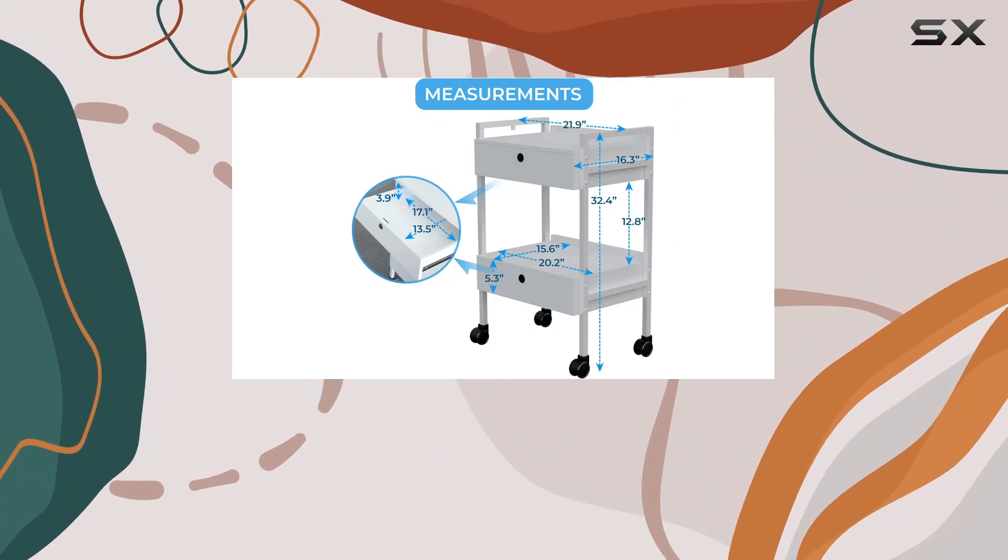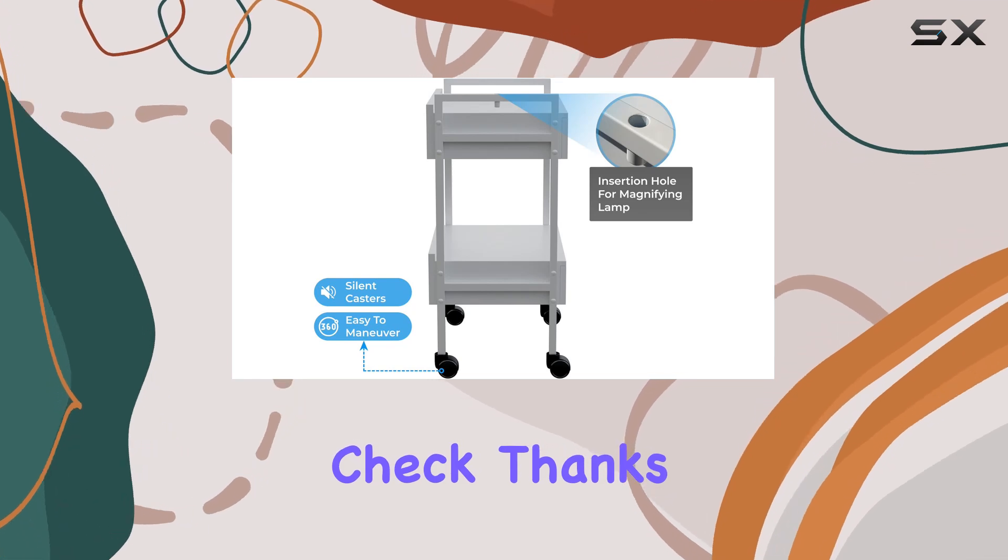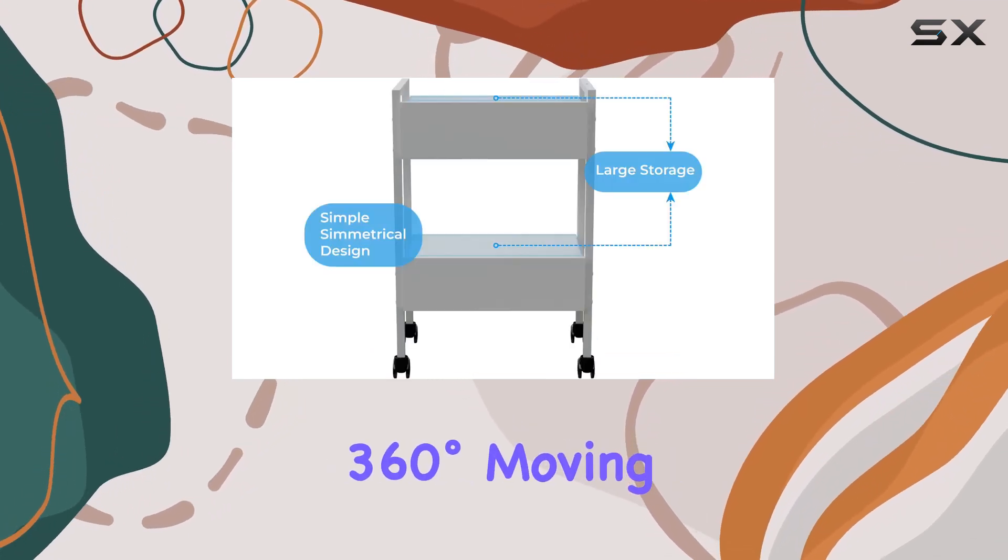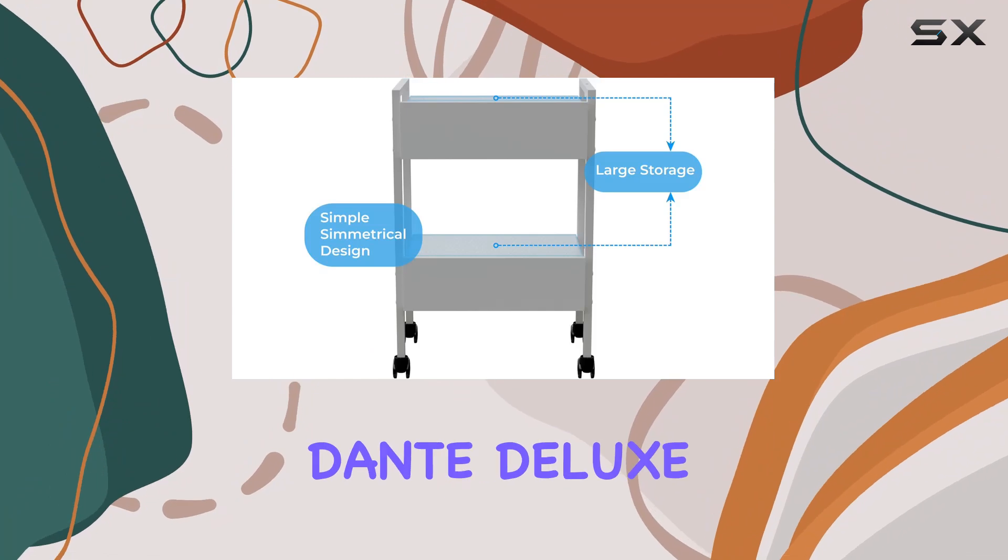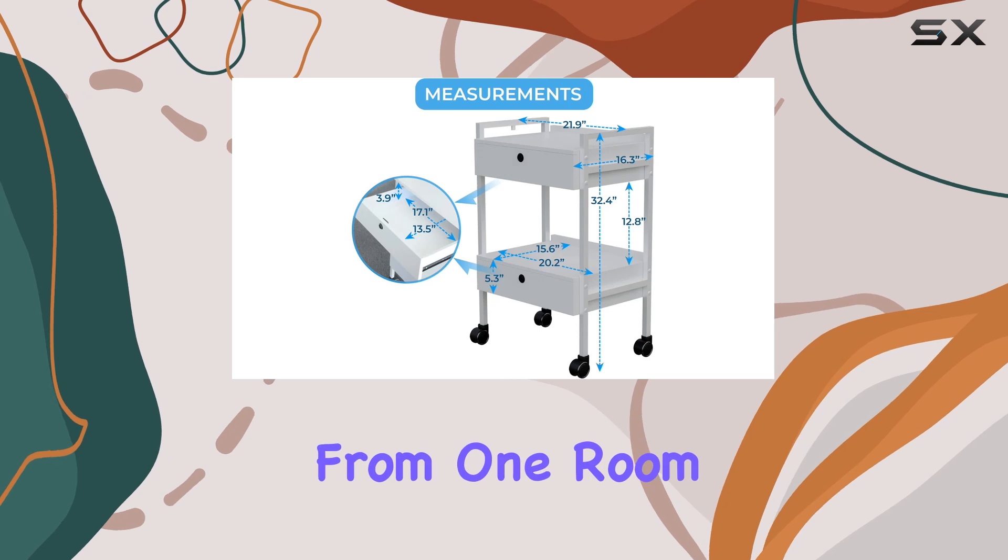And mobility? Check. Thanks to its built-in 360-degree moving casters, the Dante Deluxe glides effortlessly and quietly around your salon. Need to move equipment from one room to another? No problem—this trolley makes it a breeze.